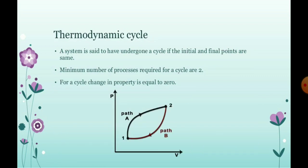How the cycles in thermodynamics are to be considered? The system is said to have undergone a cycle if the initial and final points are the same. If the minimum number of processes required for the cycle are 2, then for the cycle, changes of properties equal to 0.